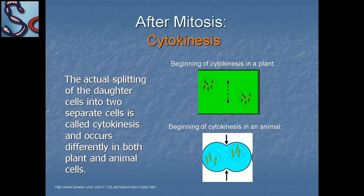After telophase comes cytokinesis. The actual splitting of the daughter cell into two separate cells is called cytokinesis, and it occurs differently in plant and animal cells. The beginning of cytokinesis differs between plant and animal cells.